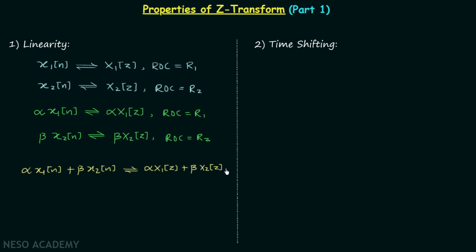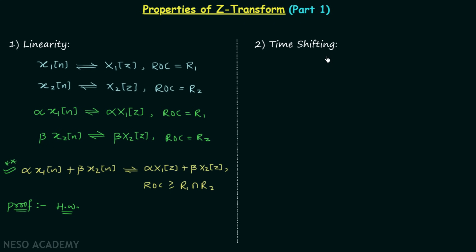The region of convergence will be at least R1 ∩ R2. This property is known as the linearity property of the Z-transform. The proof is homework for you, since we have already seen the proofs of the linearity property of the Laplace transform and the Fourier transform. Now we will move on to the second property: the time shifting property.